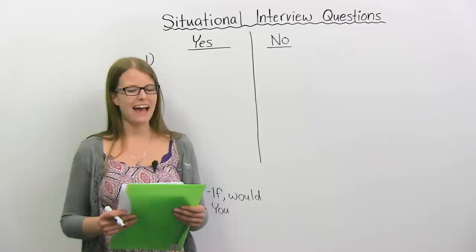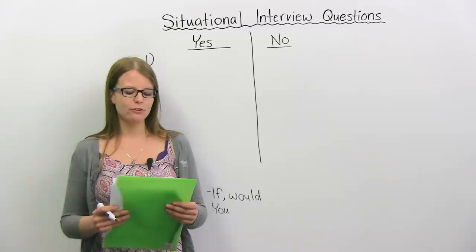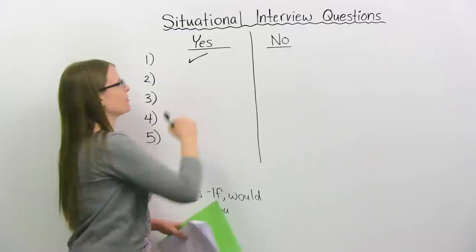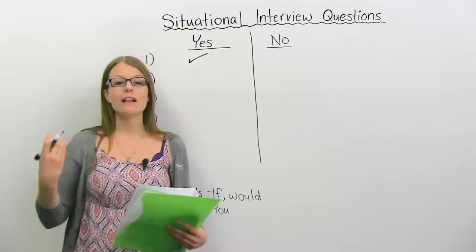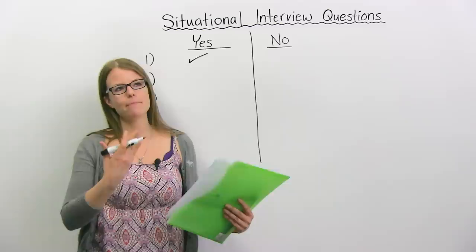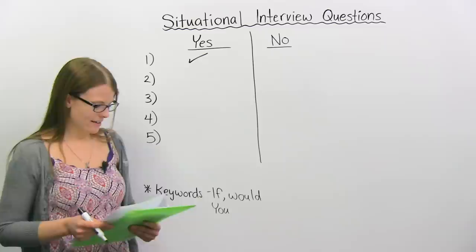Question number one: 'What would you do if you knew your boss was absolutely wrong about an important work-related issue?' This question is a situational question. How do we know? Well, it uses 'what would you do' — so this is an imagination question. You're not talking about your past experience; you're talking about, hypothetically, 'if this happened, I would do this.' It's something you imagine in your head that you would do.